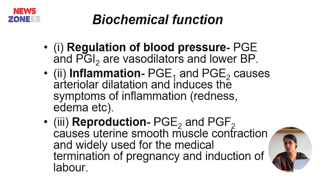Biochemical functions. Number one: regulation of blood pressure. Prostaglandin E and prostaglandin I2 are vasodilators and lower blood pressure. Number two: inflammation. Prostaglandin E2 and prostaglandin E1 cause arterial dilation and induce the symptoms of inflammation — redness, edema, etc.